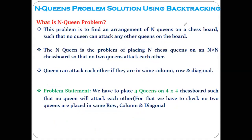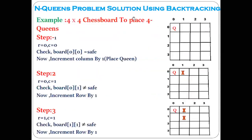That is our main goal: to place four queens on the four-by-four chessboard without attacking each other. Instead of directly taking the algorithm, I have taken this algorithm in the form of pseudocode. The better way to understand the algorithm is in the form of pseudocode and an example. So directly, I have taken the example.